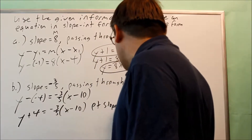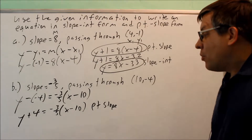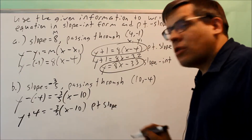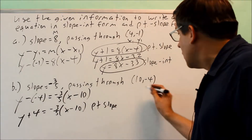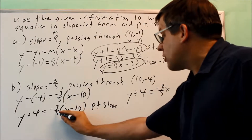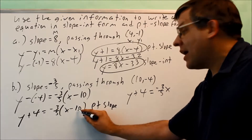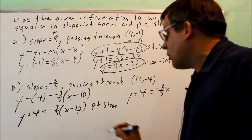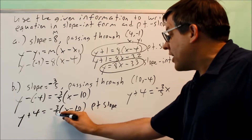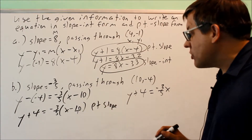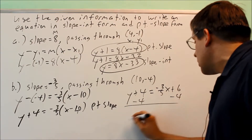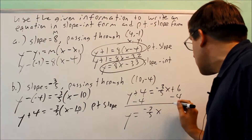That is the first answer — point-slope form. To get slope-intercept form, I multiply through by negative 3/5. So y plus 4 equals negative 3/5 times x, and I also multiply negative 3/5 by 10: negative 3 times negative 10 is 30, divided by 5 is 6. Subtracting 4 from both sides gives y equals negative 3/5 x plus 2.